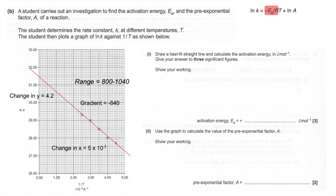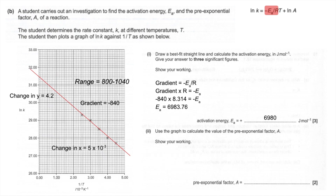We use the gradient to calculate Ea. The gradient equals −Ea/R, so Ea = −gradient × R. Putting the numbers in: 840 × 8.314 = Ea, giving 6983.76, which to three significant figures is 6,980 J mol⁻¹. The accepted range was 6,650 to 8,650 J mol⁻¹.